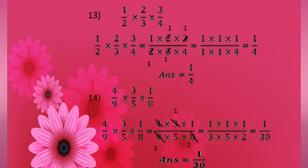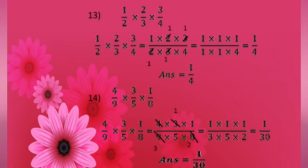Next sum: 1 by 2 into 2 by 3 into 3 by 4. Write it as 1 into 2 into 3 by 2 into 3 into 4. You can multiply numerators and denominators and then simplify, or directly cancel common factors. Cancel 2 from numerator and denominator; cancel 3 from numerator and denominator. You get 1 into 1 into 1 by 1 into 1 into 4, which is 1 by 4.